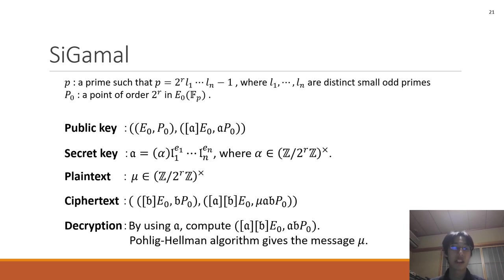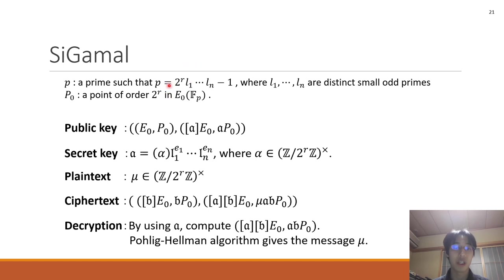Next, I explain the construction of C-GAMMA. Let p be a prime such that this equation. This is very similar to the prime in the CSIDH setting. Here is a different point: in the CSIDH setting this number is 4, but in the C-GAMMA setting this number is 2^{r_p}. Let P be a point of order 2^{r_p} in E0(F_p). The public key is this set, and the secret key is the integral ideal.